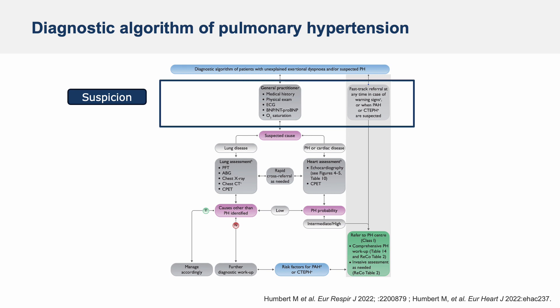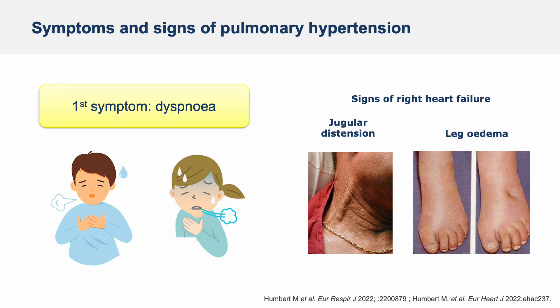Let's start with the first step of this algorithm: suspicion, which is mainly based on symptoms and clinical signs. The first symptom of pulmonary hypertension, and often the only one, is dyspnea, which is shortness of breath. Another common symptom is fatigue, which like dyspnea is not specific to the disease.